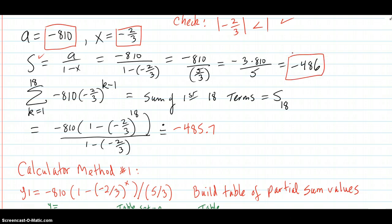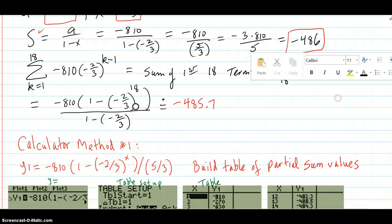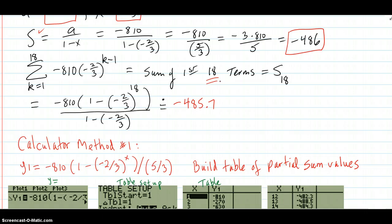Now we're going to verify that. We're going to verify that by figuring out the 18th sum. In other words, the sum of the first 18 terms, capital S sub 18. Why 18? It's a lot of terms. And by then, we might see that the series is converging to negative 486.